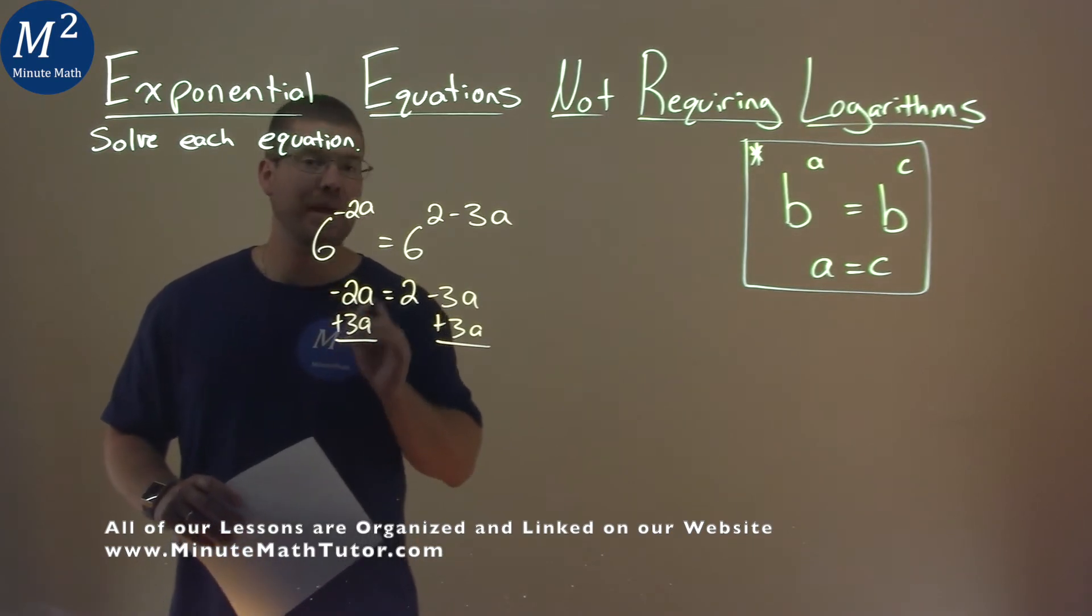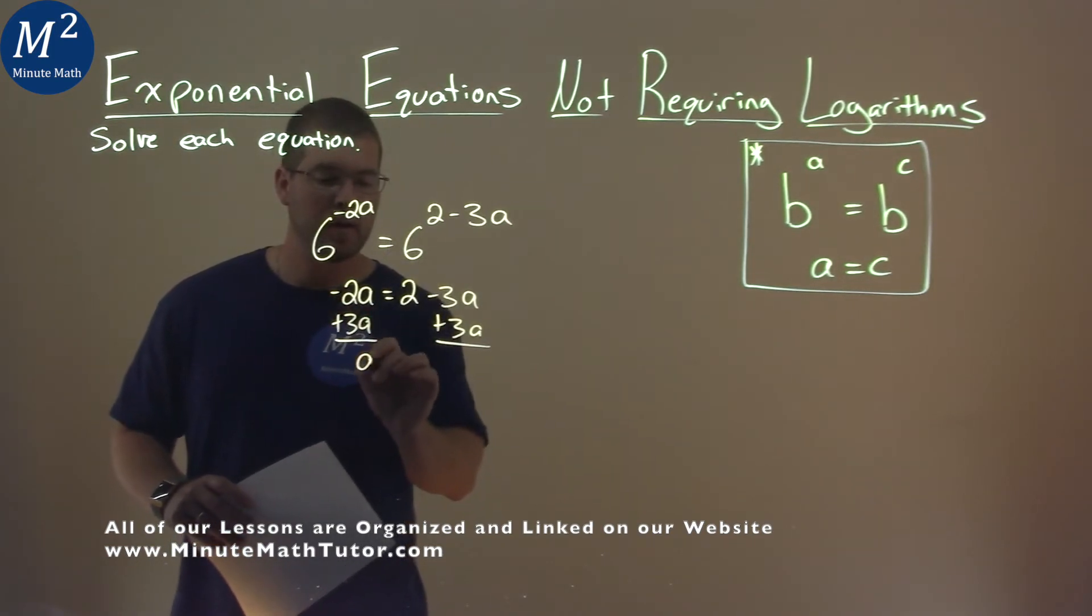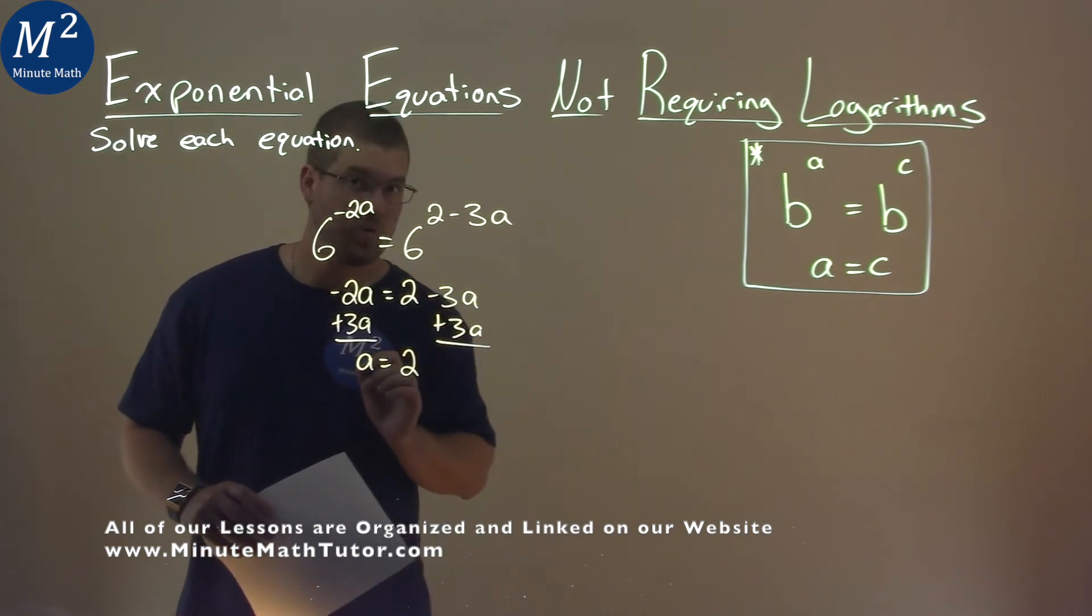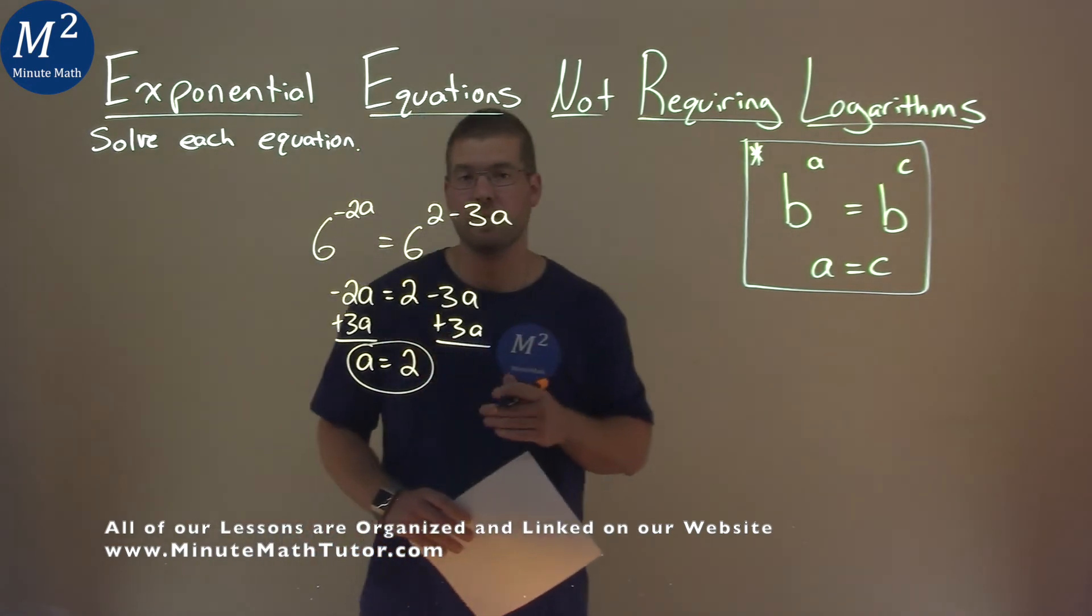Negative 2a plus 3a is just 1a which we can write just as a. 2 is what is left over and that's it. Our final answer here is a equals 2.